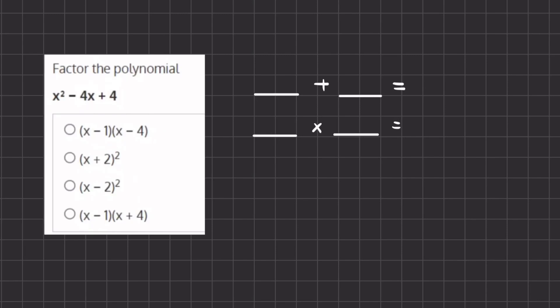Alright, so in this problem we want to factor the polynomial x squared minus 4x plus 4.